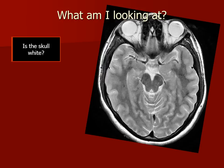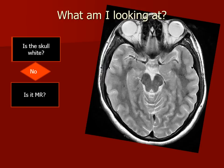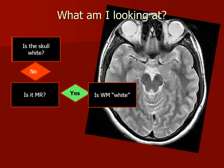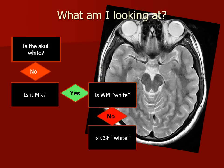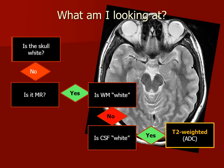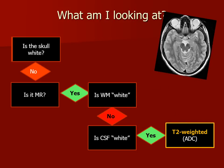Here is another MR image. We can see that in this patient, the white matter is not white — it is actually darker than the gray matter. We can also see that the cerebrospinal fluid is white. And this is going to be a T2 weighted image.